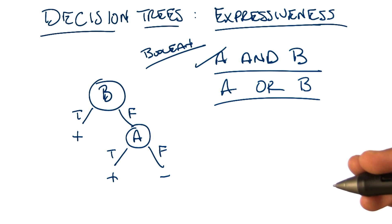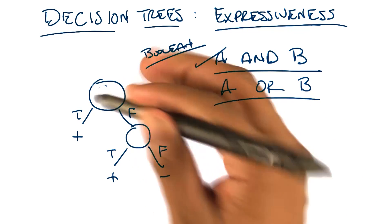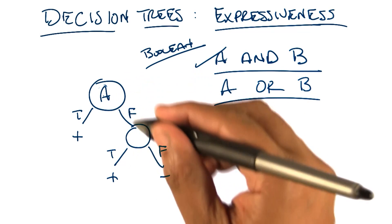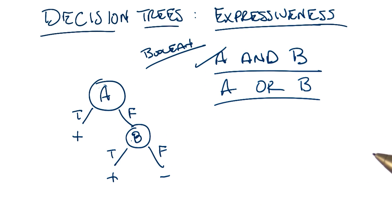That represents the function, the logical function A or B, yeah. Right. And what happens if I swap A and B around? Does it still work? I mean, since they're commutative, I want to say it shouldn't make a difference. But let's just double check that.